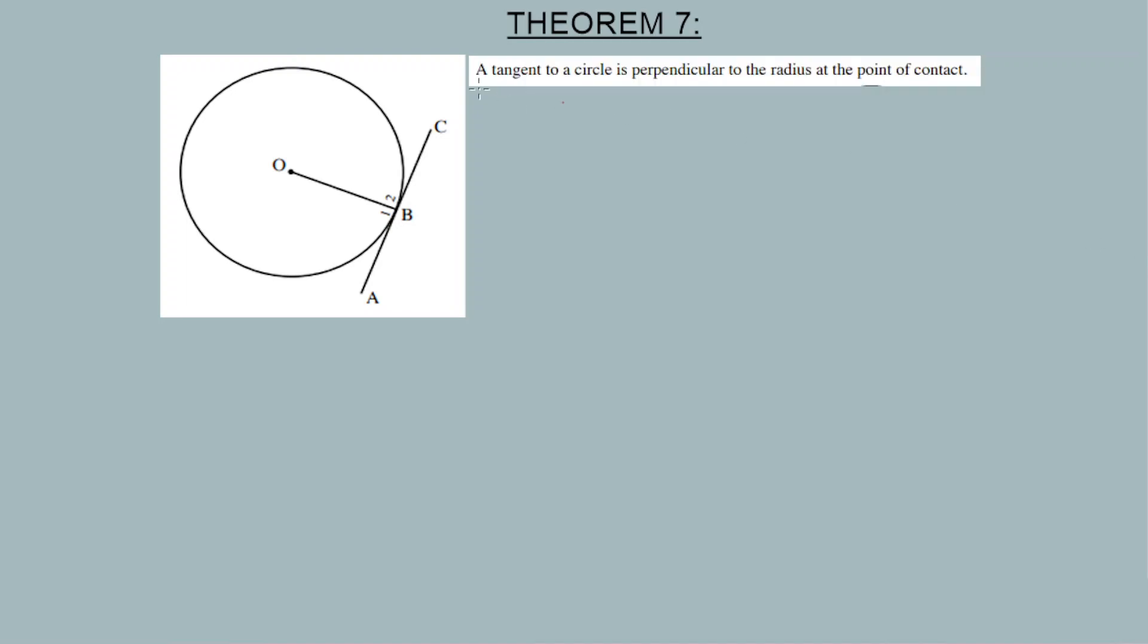Now, theorem number 7: a tangent to a circle is perpendicular to the radius at that point of contact. This is theorem number 7. If a tangent is perpendicular to the radius at the point of contact, it means that would be 90 degrees, theorem number 7.